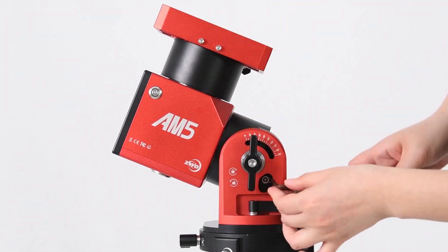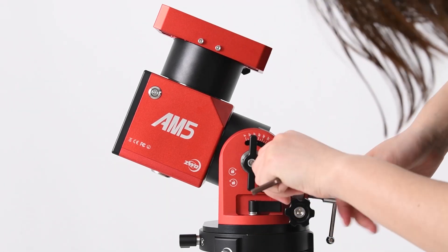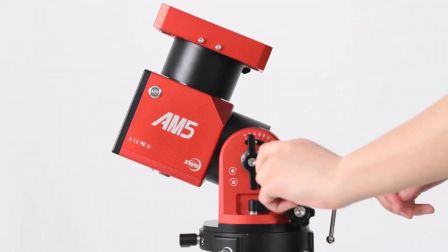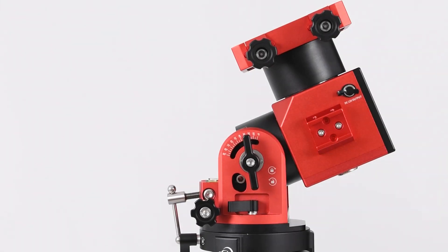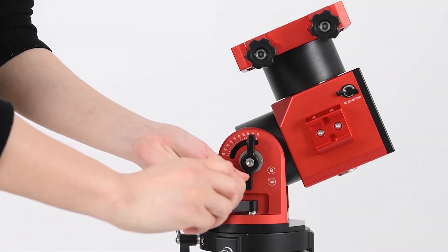The hex screws should be visible from the openings on each side of the mount at this point. The default state of the AM5 equatorial mount is equatorial mode, and the latitude range should normally be from 0 degrees to 60 degrees.